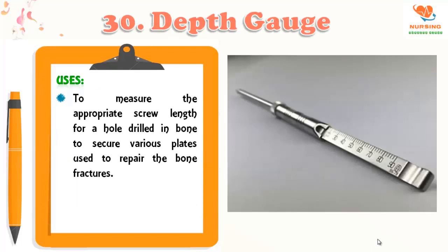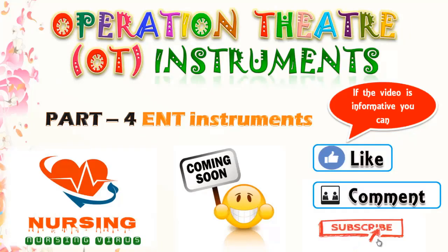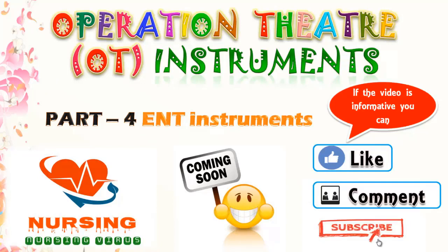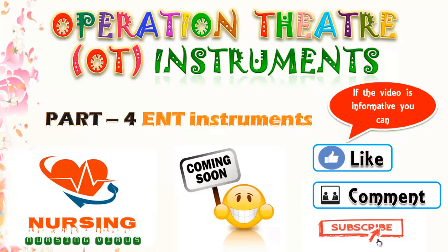The final instrument is the depth gauge, used to measure the appropriate screw length for the hole drilled in the bone to secure the various plates used to repair bone fractures. If the video is informative, please like, share, and comment, and don't forget to subscribe. On the next update, ENT surgical instruments will be uploaded. Thank you for watching, bye bye.